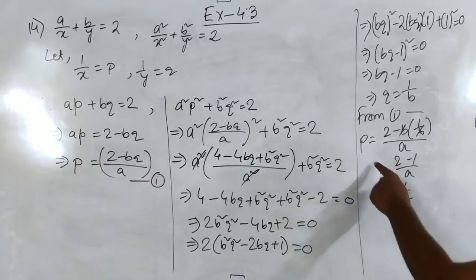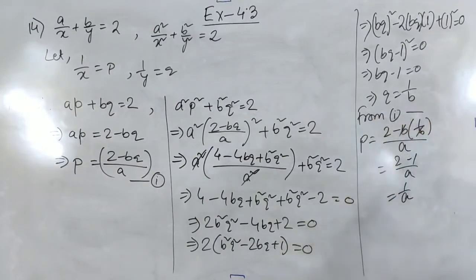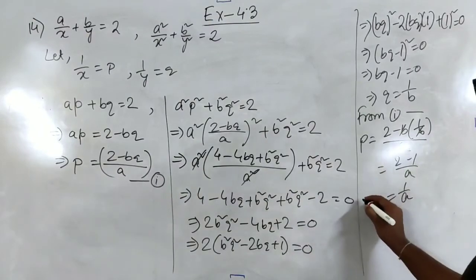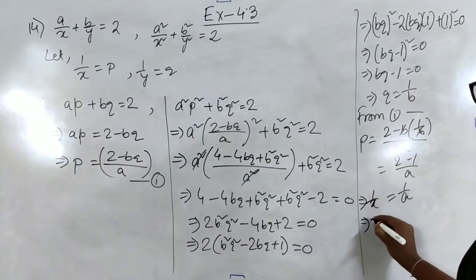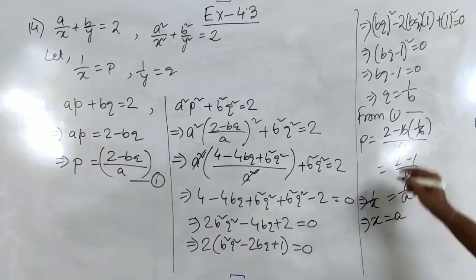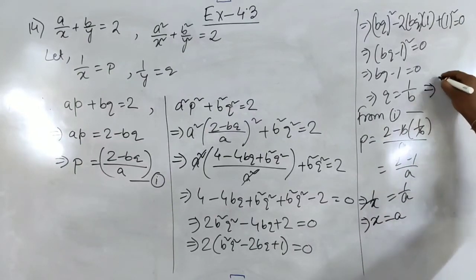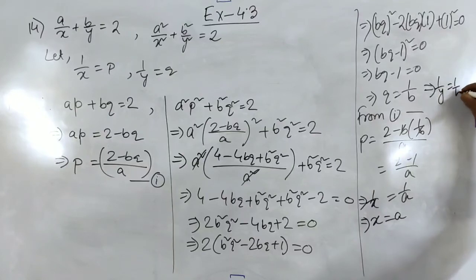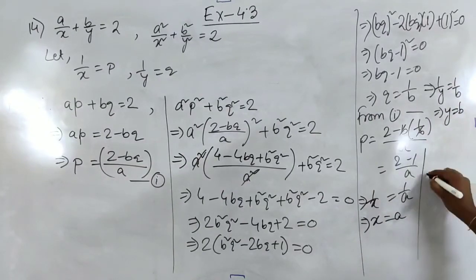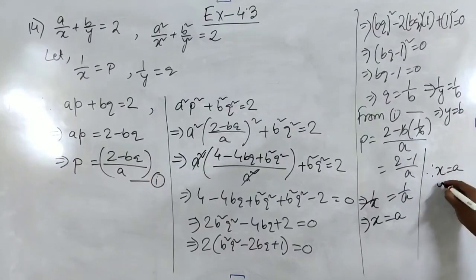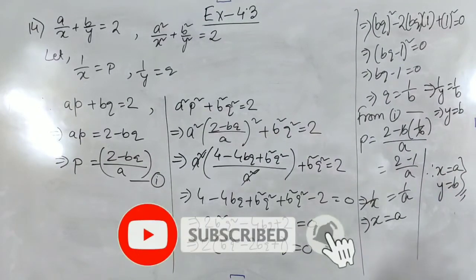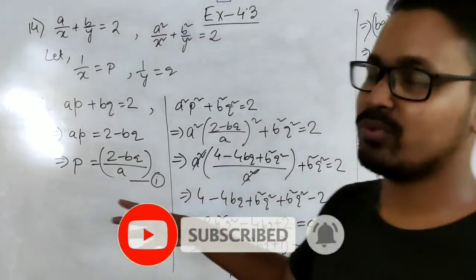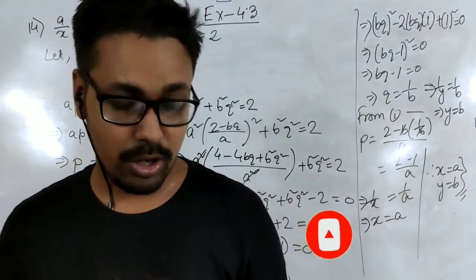Now that p equals 1/a and q equals 1/b, since 1/x equals p equals 1/a, we get x equals a; and since 1/y equals q equals 1/b, we get y equals b. Therefore x equal to a and y equal to b are the two values. That is how you solve question number 14, and that is all for today's video.